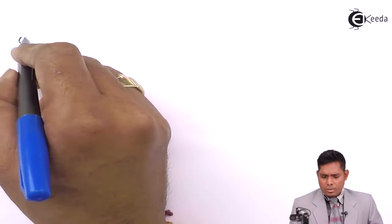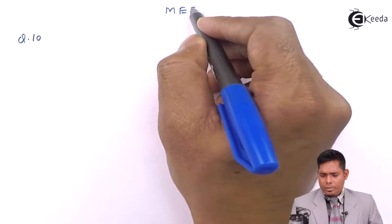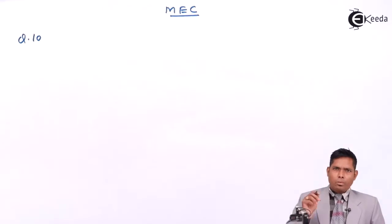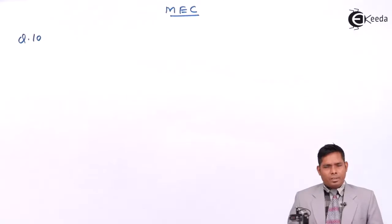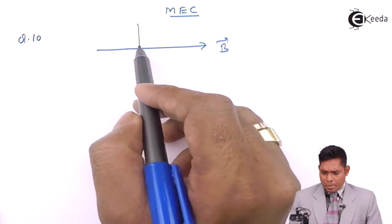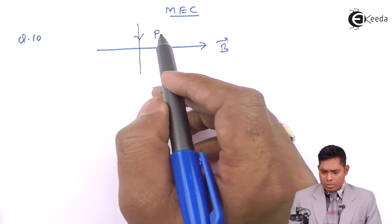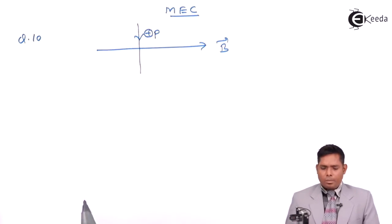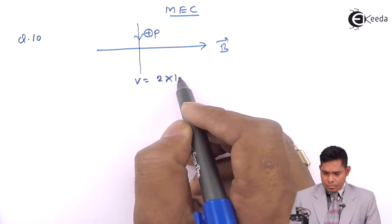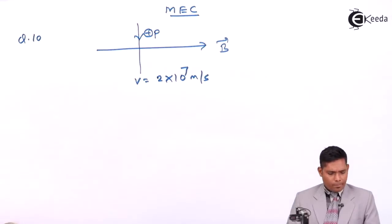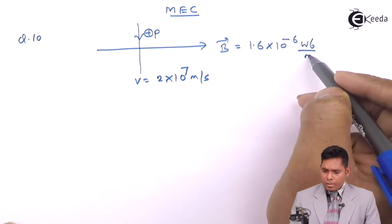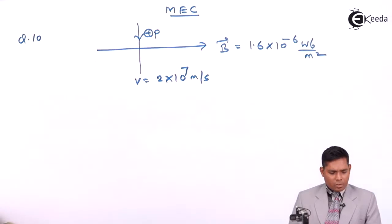Let us take one more example for question number 10 - Magnetic effect of electric current. A proton from cosmic rays enters Earth's magnetic field in a direction perpendicular to the field. This is a proton which is positively charged, entering Earth's magnetic field. It is moving with a velocity of 2×10⁷ meters per second and the magnetic field is 1.6×10⁻⁶ Tesla. Find the force exerted on the proton by the magnetic field.